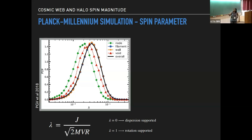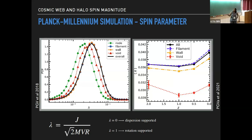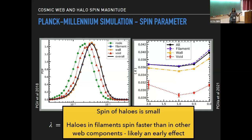Going to the spin magnitude — measured using the lambda parameter, something like Peebles' or Bullock's parameter — this is the distribution of spin magnitudes. If you take the median and plot it as a function of redshift, at redshift zero filament halos are spinning faster. This difference is already seen at earlier redshifts, so it's likely an early effect, which you'd expect because they undergo different torquing due to different tidal environments.